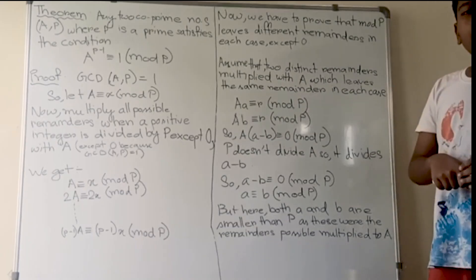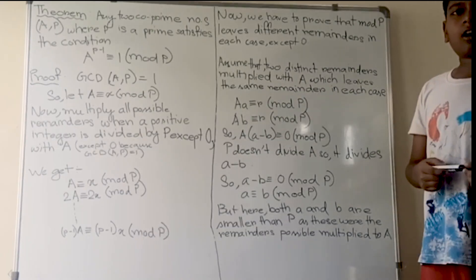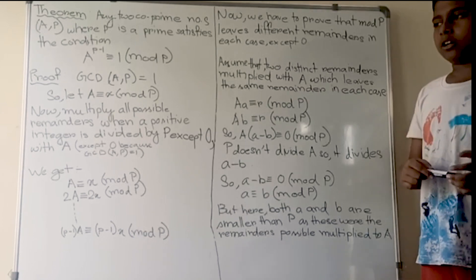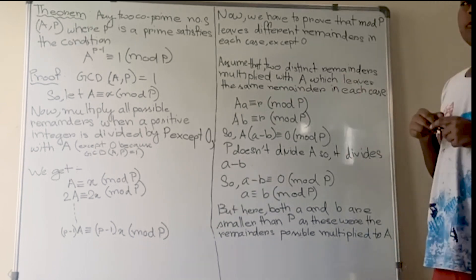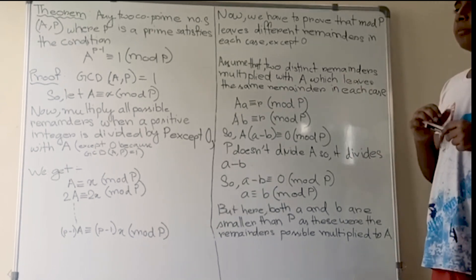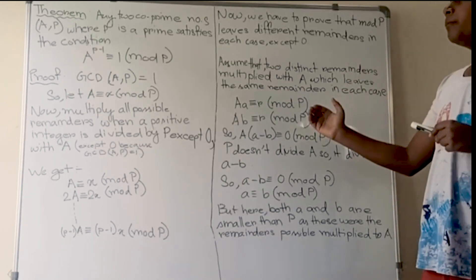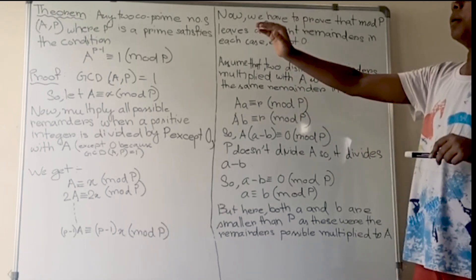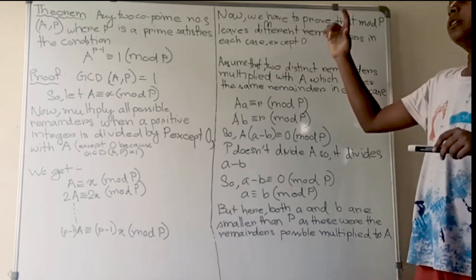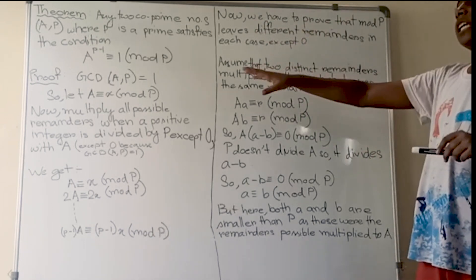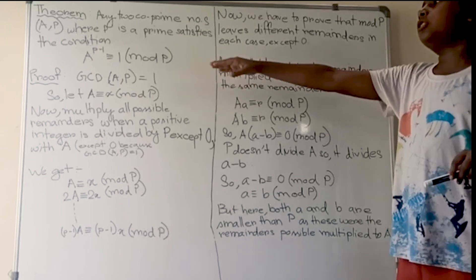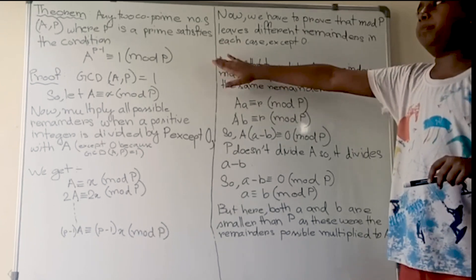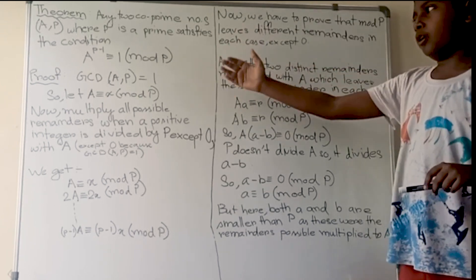Good morning everyone. I am Devaram Das of class 8, studying in DV Model School. Here I am with the proof of Fermat's Little Theorem. It states that for any two co-prime numbers a and p, where p is a prime, they satisfy the condition: a to the power p minus 1 is congruent to 1 mod p.